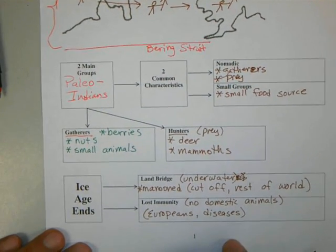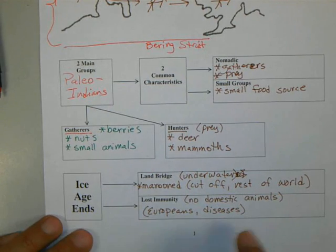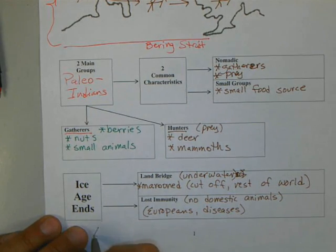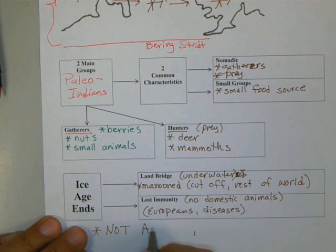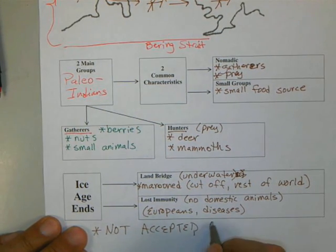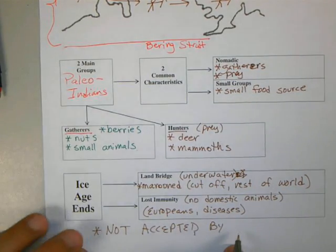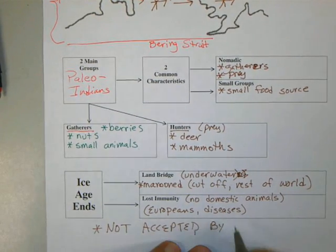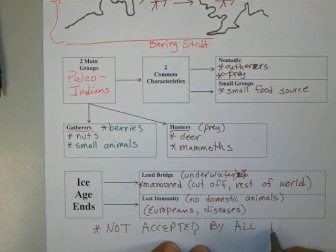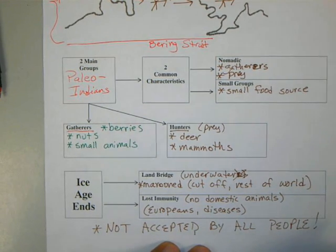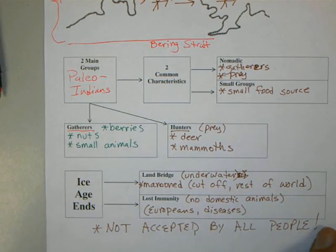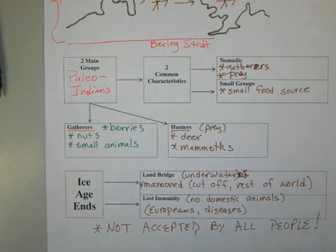The last item: because it is a theory, it is not accepted by all people. Some of these are the Native Americans, and according to them, 'We've been here all our lives. We have no Asian characteristics in us.'